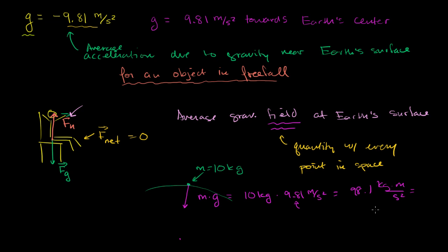That unit is also the unit of force — 98.1 newtons. This object might not be in free fall, and so this is why g becomes relevant even in a situation where the object isn't in free fall. g gives us the force per unit mass of gravity on an object near the surface of the Earth. So the average gravitational field is giving us force per mass. You give me a mass near Earth's surface — whether it's an object in free fall or not — multiply that mass times g and it gives you the force of gravity acting on that object.